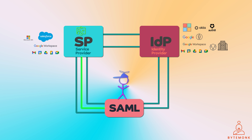SAML, on the other hand, specializes in identity and single sign-on, focusing on the exchange of authentication and authorization data to establish and verify a user's identity. For example, in a corporate environment, SAML can implement SSO so that when you log in once to your corporate network, you gain access to various services like email, internal applications, and cloud resources without logging in separately for each. SAML asserts your identity to these services.